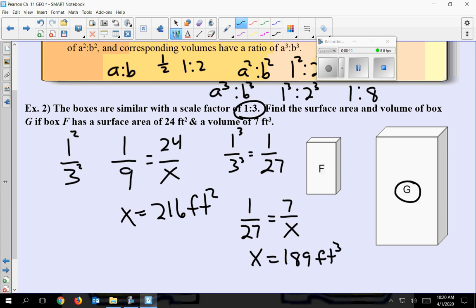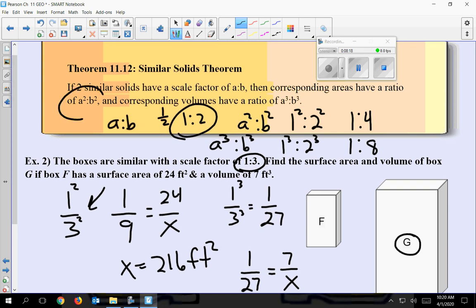There you go. So you want to get everything to scale factor, put it into a ratio form, and then use your little rules up here, this A squared, B squared, A to the third, B to the third, depending on surface area or volume. You guys have done ratios before, you've done a bunch of that, and you should be able to do this pretty easily.